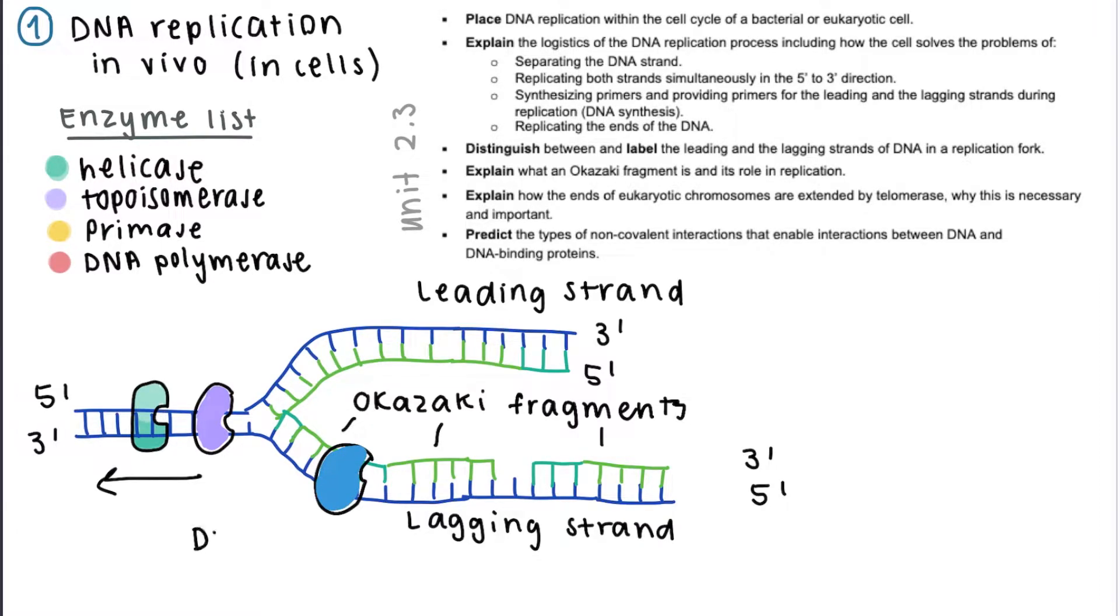Thankfully, we have an enzyme called DNA ligase that adds nucleotides to the gaps between the different Okazaki fragments. And I forgot to mention this in the diagram, but there's also an enzyme that removes the RNA primers and replaces them with DNA.